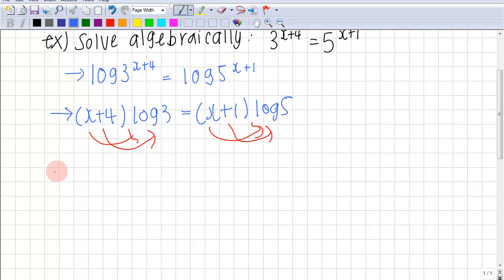We write this as x log 3 plus 4 log 3 is equal to x log 5 plus log 5.